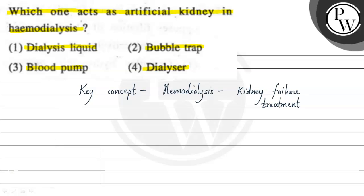Now let's see how hemodialysis works. Blood is drawn from a catheter. The catheter is connected via a fistula. Blood is then passed through a membrane filter.